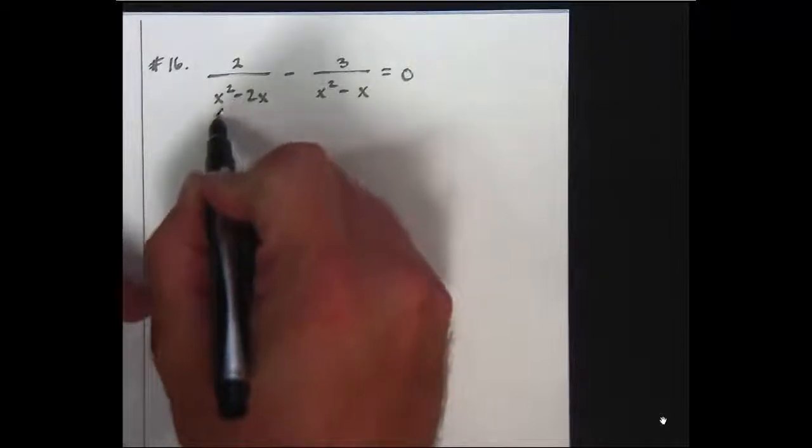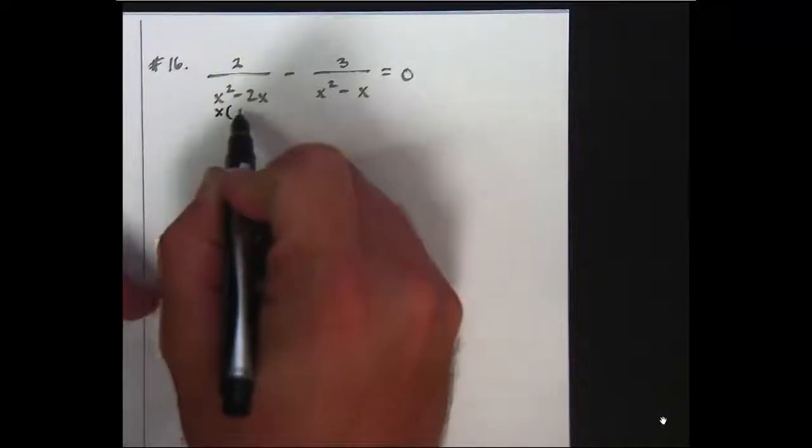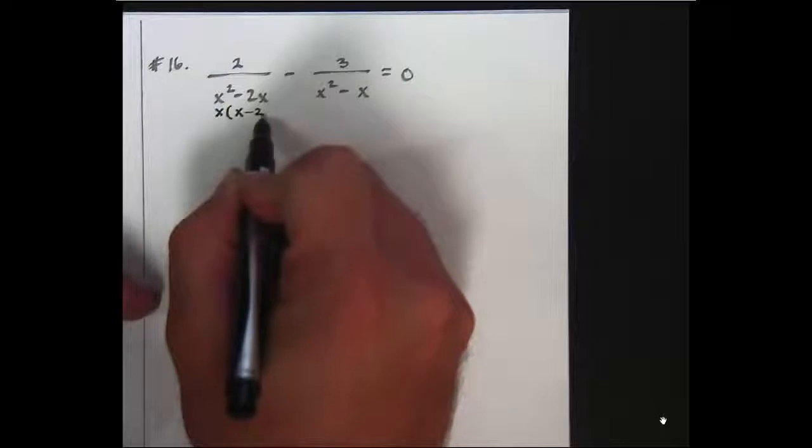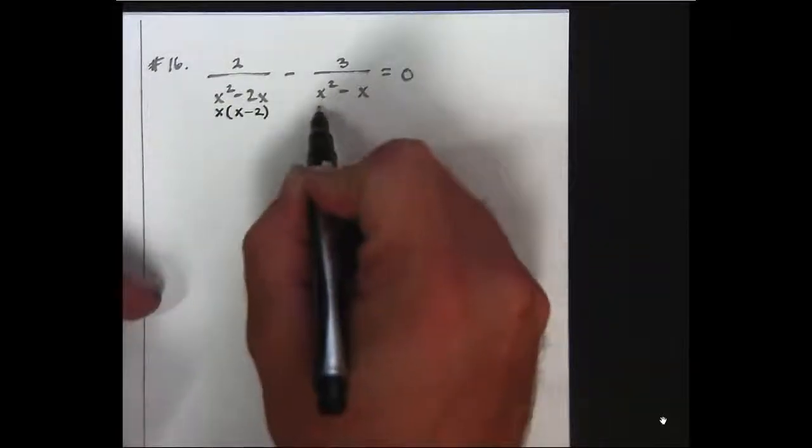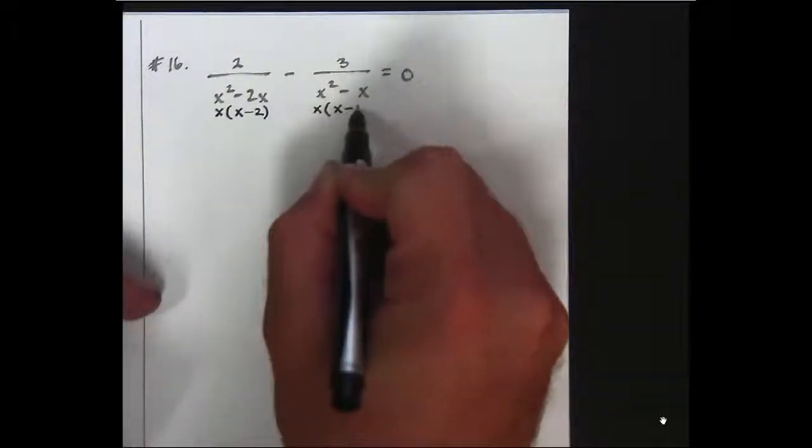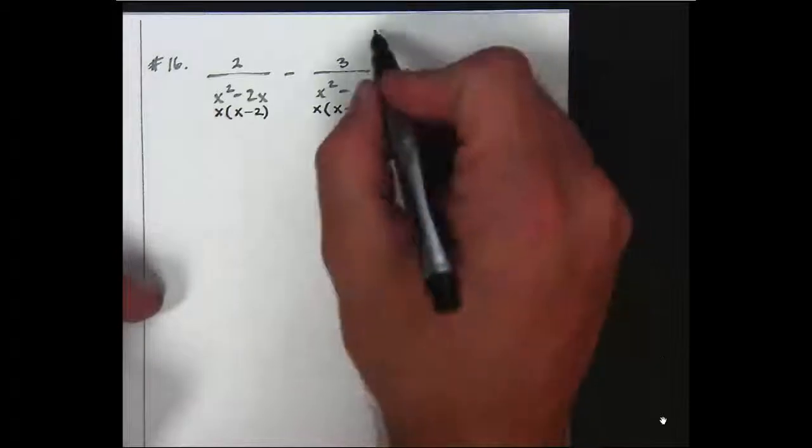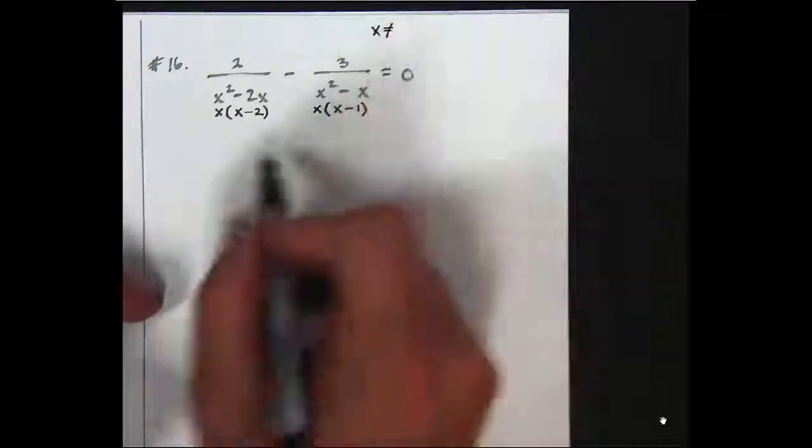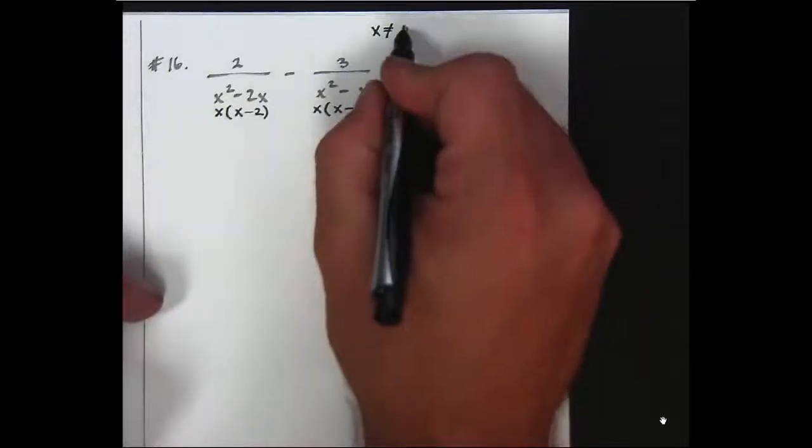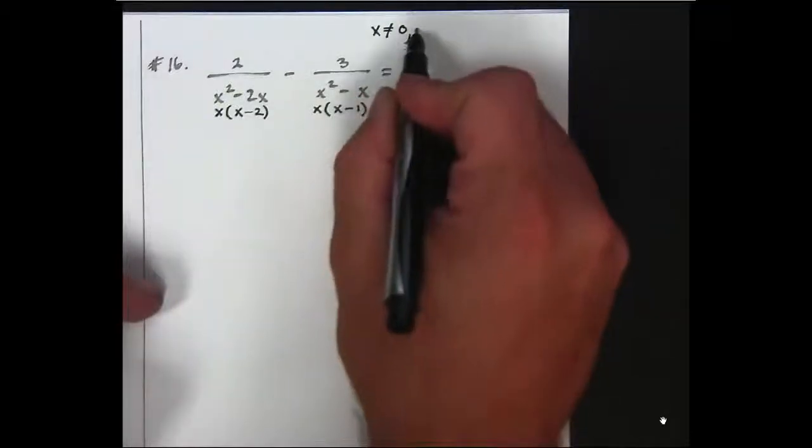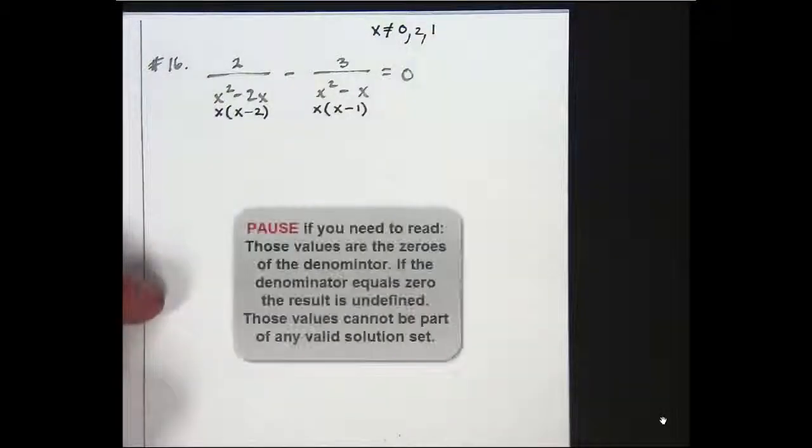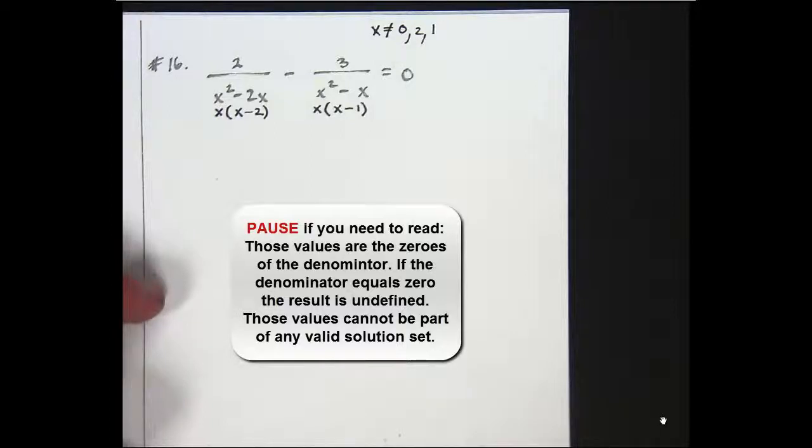So let's begin by factoring. When I factor out of x here, I get x minus 2, and when I factor out of x here, I get x minus 1. Immediately, that informs me that x cannot equal 0, 2, or 1. So should any of those solutions come up at the end, we're going to ignore them because they aren't valid.